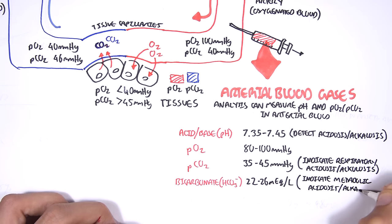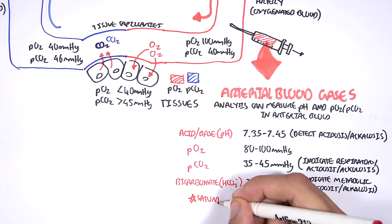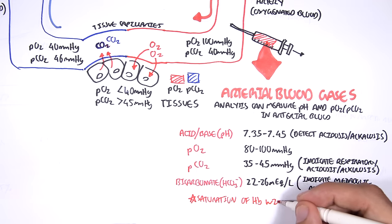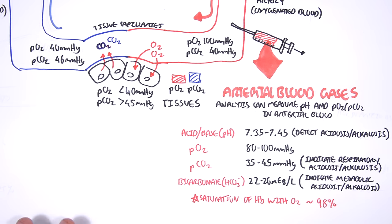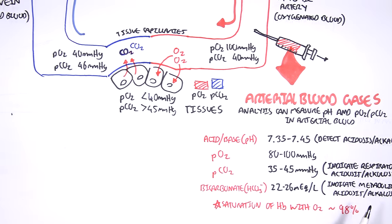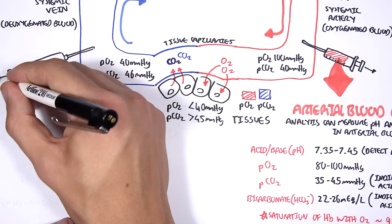You have to use all these readings together to formulate a proper cause of acidosis or alkalosis. An important note: the saturation of hemoglobin with oxygen in arterial blood is about 98%, so hemoglobin is well saturated with oxygen. We can also measure the mixed venous blood.